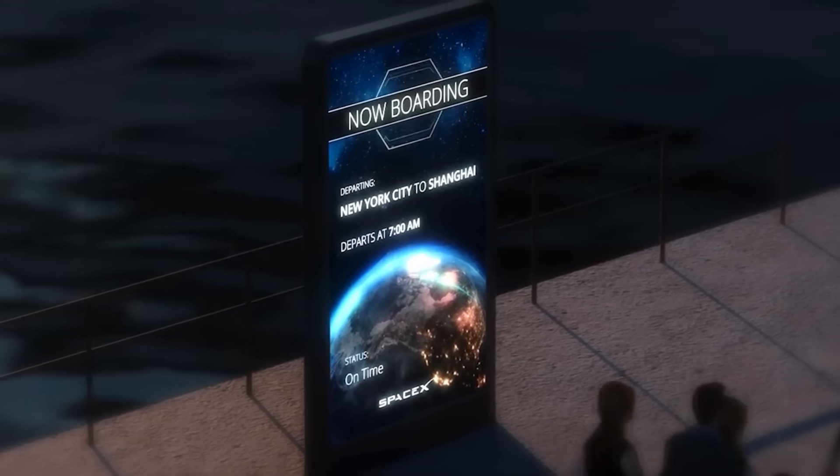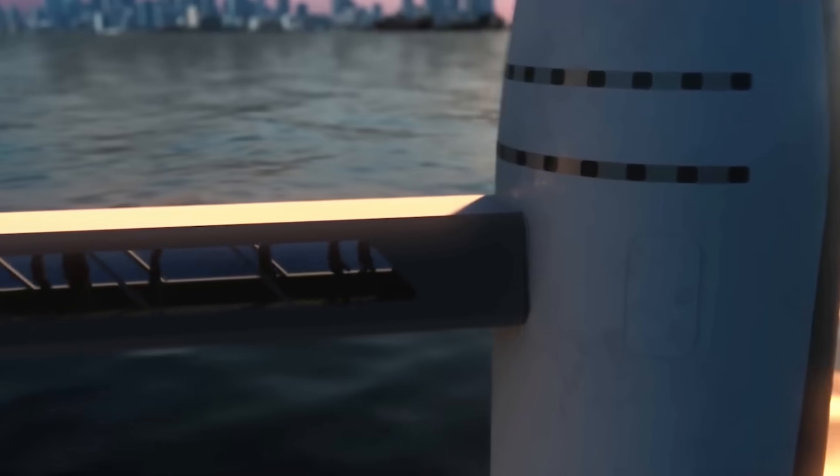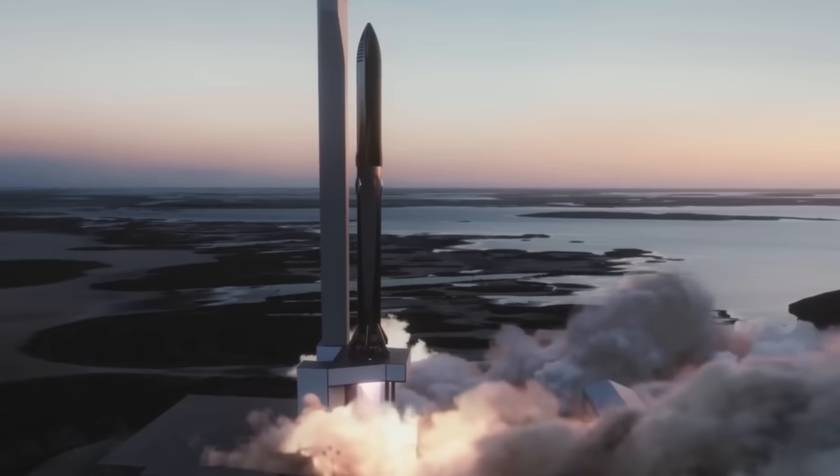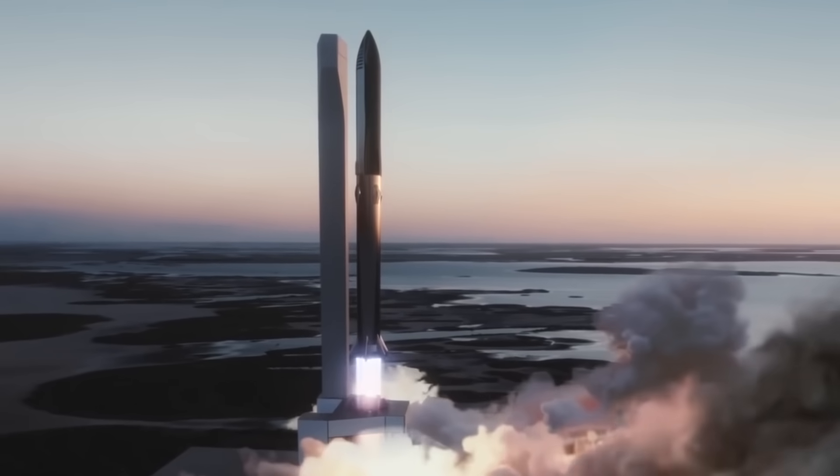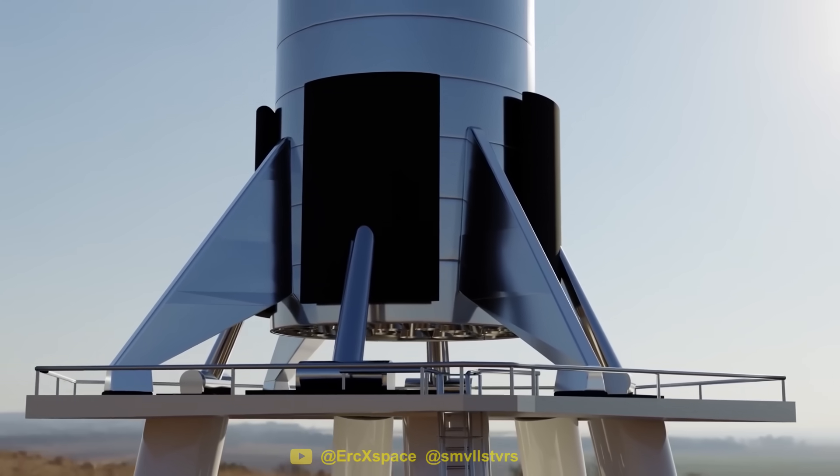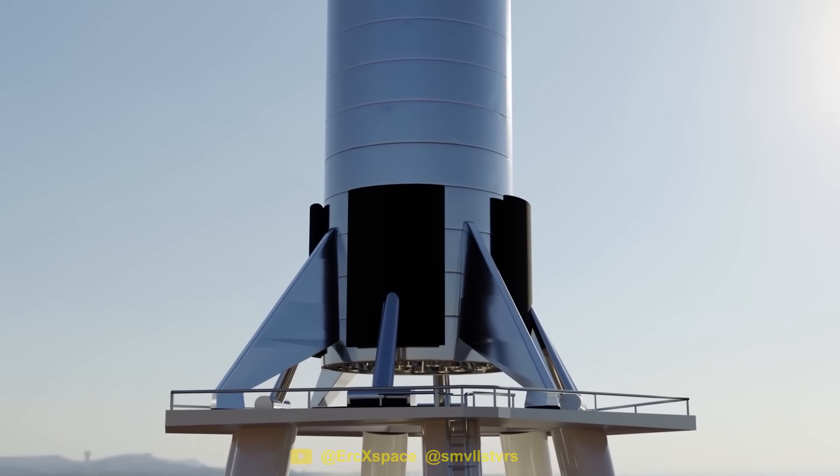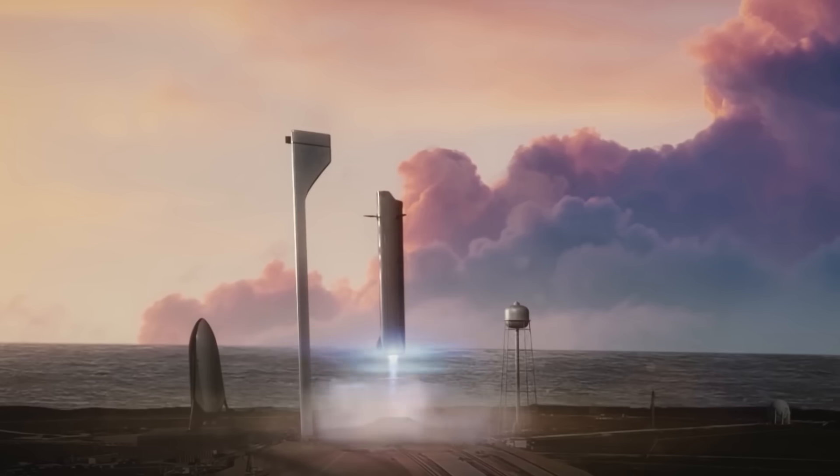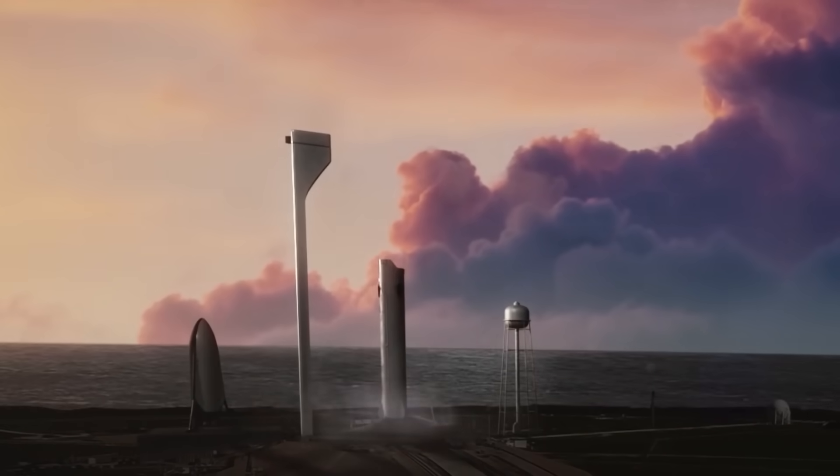On top of this, SpaceX also wants to use Starship for Earth-to-Earth passenger travel. This means Starship will need to perform multiple flights a day with a turnaround time on par with airliners. The original plan for Super Heavy was to land directly onto the launch mount, making it instantly ready for its next flight.